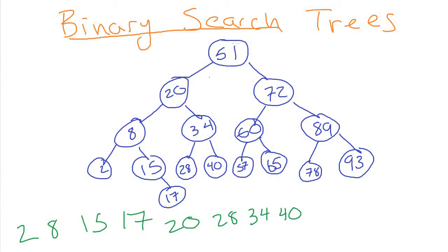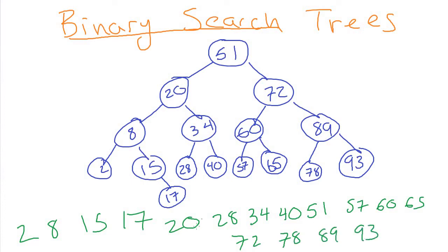Then we've handled the whole left subtree of the root node, so we do the root node itself, then the right side: 57, 60, 65, 72, 78, 89, 93. If you look at it, we've hit all of the nodes in order. So if we do an in-order traversal of a binary search tree, it gives us the numbers back out in sorted order. I'm going to go ahead and put the in-order traversal into our binary search tree class so we can test that data is getting inserted correctly — if it is, it should come out in sorted order.